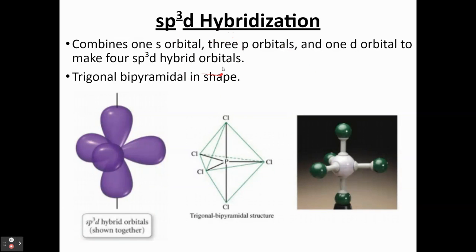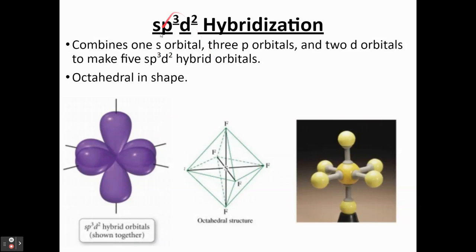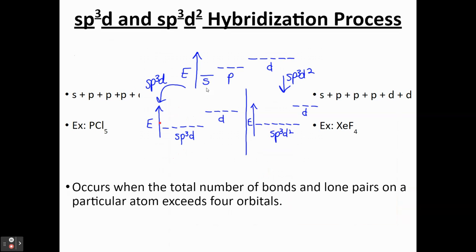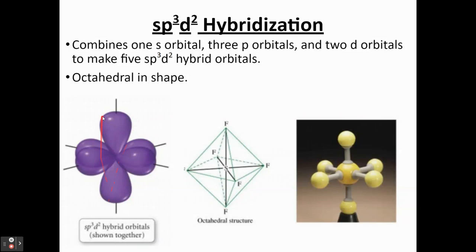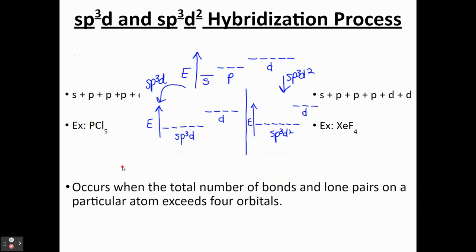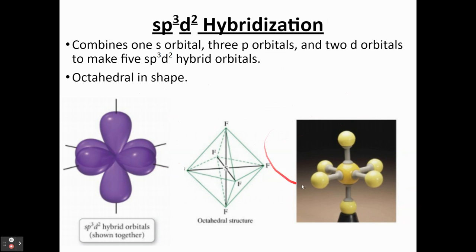Then there's also SP3D. So you can do practice problems with that. But essentially, the way it works is you combine 1S, 3Ps, and 2Ds. And you get this shape over here. So you get your hybrid orbitals combined here. And you get an octahedral shape, just to clarify. So you get an octahedral structure.